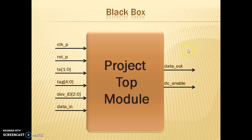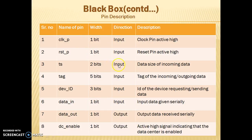This is the black box of our main module, followed by a pin description. We have the TS pin, which is the data size of the incoming data; Tag, which is the tag of the incoming or outgoing data; Device ID, which shows the device requesting or sending the data; Data In and Data Out, which are both bit serial links; and the DC Enabled signal, which is asserted high each time the data center is accessed.